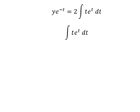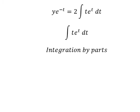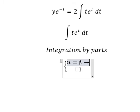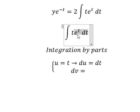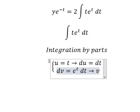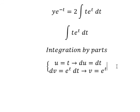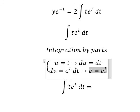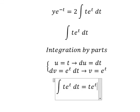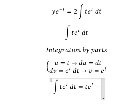We concentrate on the right side and use integration by parts. We let U equal t, and dV equal e to the power of negative t dt. This gives U times V minus the integral of V dU.